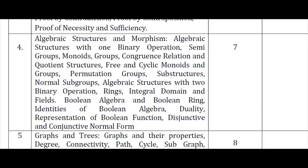Module 4: Algebraic Structures and Morphism. Algebraic Structures with One Binary Operation: Semigroups, Monoids, Groups, Congruence Relation and Quotient Structures.